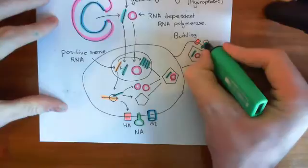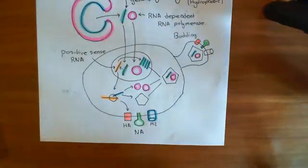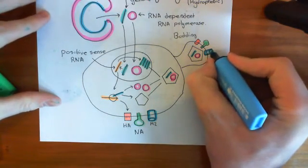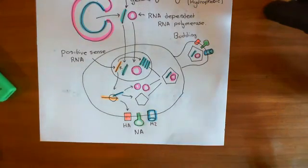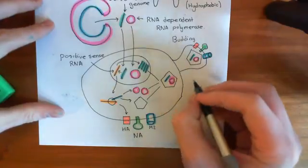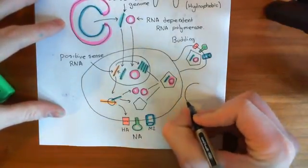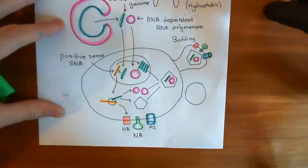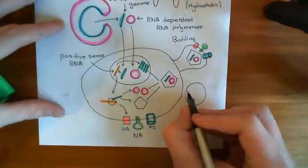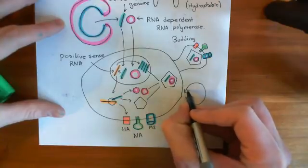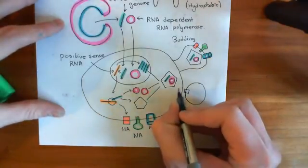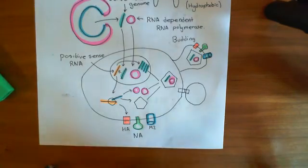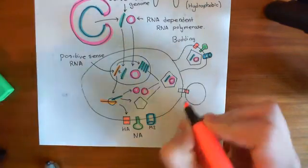So here's hemagglutinin in red, neuraminidase in green, and the M2 ion channel in blue. What will finally happen is this new virion particle will pinch off, and then you'll have the virion particle next to the membrane. The problem comes now — this virion particle that you've just produced has hemagglutinin in its membrane, and this cell has sialic acid in its membrane. So the hemagglutinin is going to bind to the sialic acid.